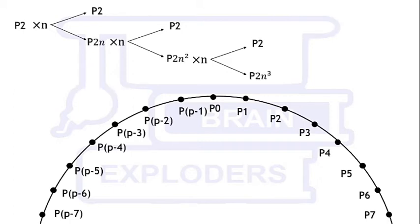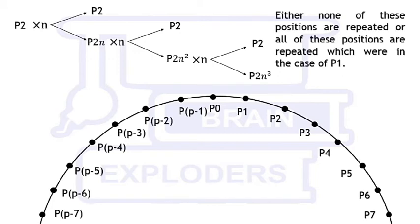This happens for P2 also. It is possible that all the positions here are same as in the previous case and in some different order, but it is not possible that some are from the previous series of P1 and some are not. Either none of these positions are repeated, or all of these positions are repeated which were in the case of P1.